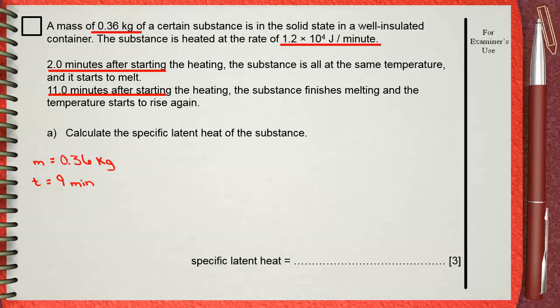Let's go back to the given rate of heating, which is 1.2 × 10^4 joules per minute. This is the Q in 1 minute. But the total period of melting is 9 minutes.